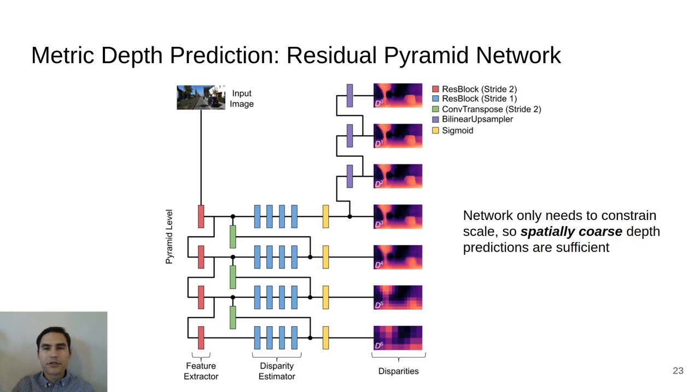Since we are only interested in using the predicted depths for scale, spatially coarse depth predictions are sufficient, and expensive feature extraction and disparity estimation at fine image scales can be avoided. Using our architecture, predicting a 32 by 64 pixel depth map can be computed in as little as 30 milliseconds on a standard CPU.